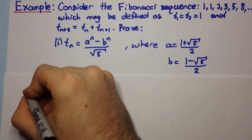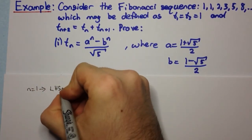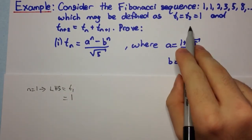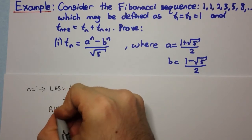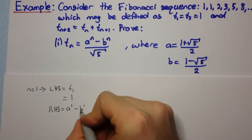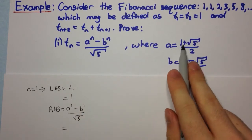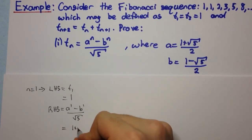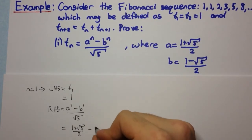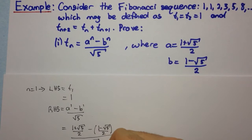Let's start with n equals 1. The left-hand side of this statement will be t₁, which is 1 by definition. Now we look at the right-hand side. This is going to be a¹ minus b¹ over root 5. So what's a to the power 1? That's just (1 plus root 5) over 2, and b is (1 minus root 5) over 2.